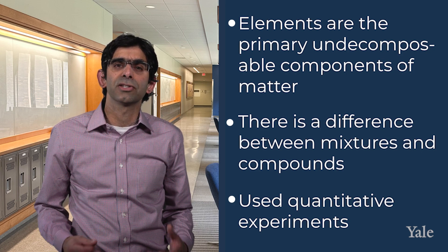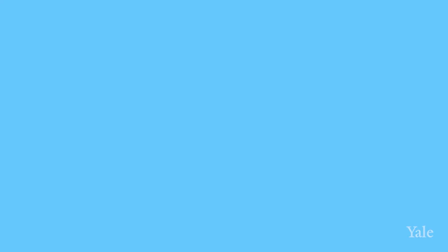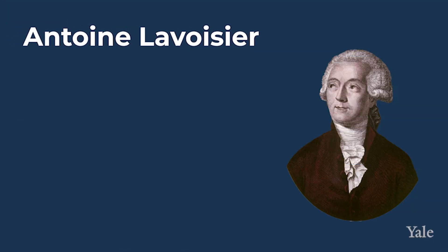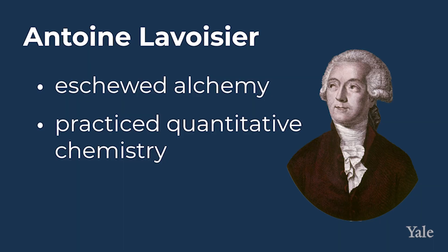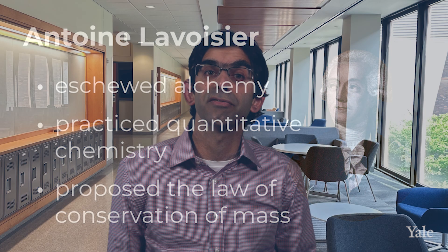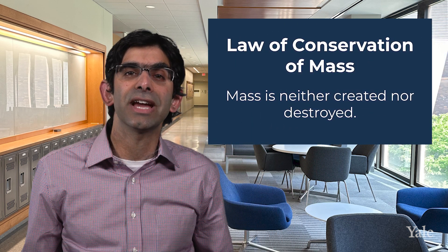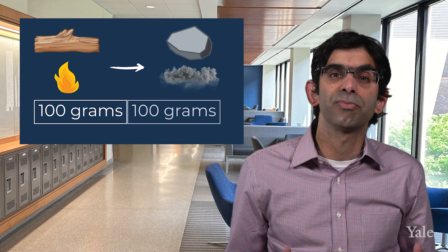Quantitative experiments are a hallmark of how scientists perform chemistry today. Now, Anton Lavoisier is widely regarded as one of the first modern chemists and the father of chemistry because he eschewed alchemy and is most closely associated with the shift of chemistry from qualitative to quantitative. Among his many notable discoveries was his proposal of the law of conservation of mass, which states that mass is neither created nor destroyed. So, when you are doing a chemical reaction, if you put 100 grams of reactants in, you must get 100 grams of products out.